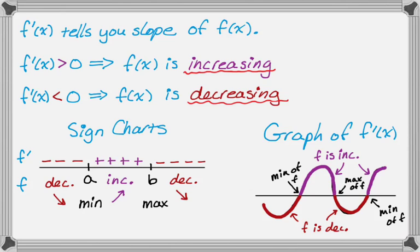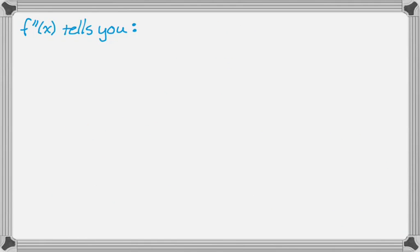Okay. So something that you'll be dealing with a lot is f double prime. So f double prime tells you two things that you just have to keep in mind. So f double prime is actually the derivative of f prime. So it kind of tells you the same thing about f prime that f prime tells you about f of x. So the first thing that it will tell you is it will tell you the slope of f prime.